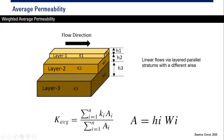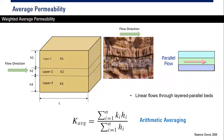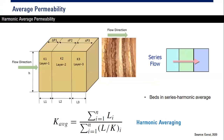You can average the permeability by weighting on the area instead of the thickness, so: k_avg = (k1·A1 + k2·A2 + k3·A3) divided by total area (A1 + A2 + A3), where each area Ai = hi × wi. This is also arithmetic averaging but area-weighted, whereas previously it was thickness-weighted.